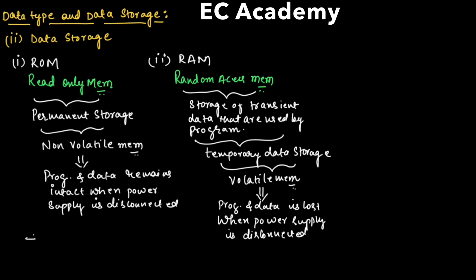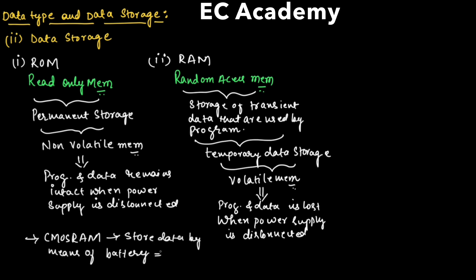There is an exception called CMOS RAM, which can store data by means of a battery. For example, it is used to store the date and time in a computer system.